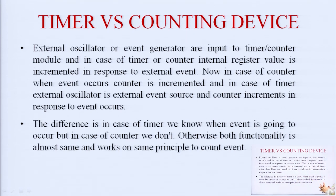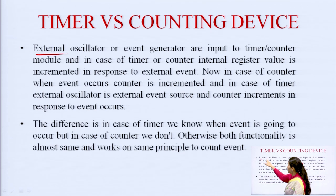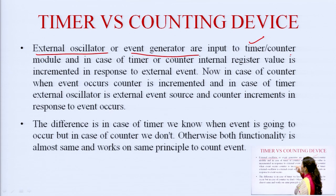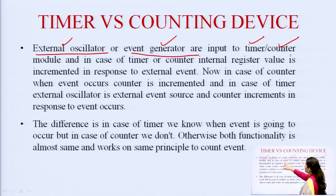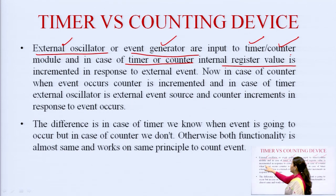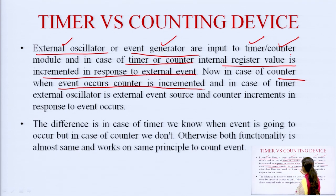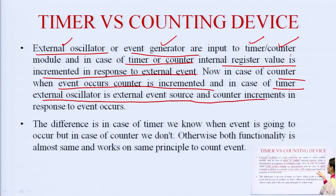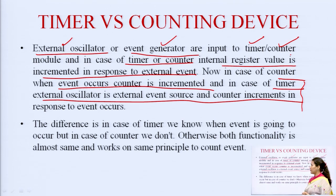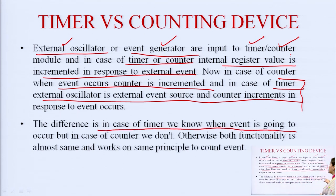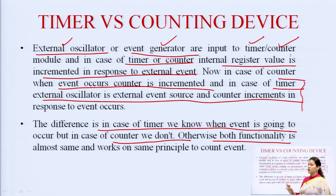Comparing timer versus counting device: both use an external oscillator or event generator as input. In case of a timer, the external oscillator is the input; in case of a counter, the event generator is the input. In both cases, the internal register value is incremented in response to the external event. The key difference is that in the case of the timer, we know when the event is going to occur, but in the case of the counter, we do not know when the event will occur. Otherwise, both work on the same principle.